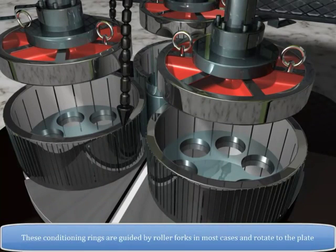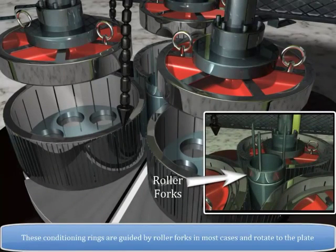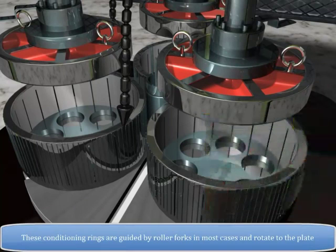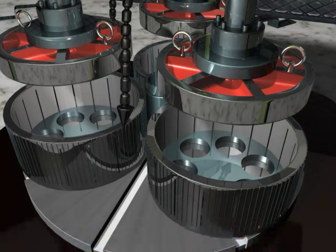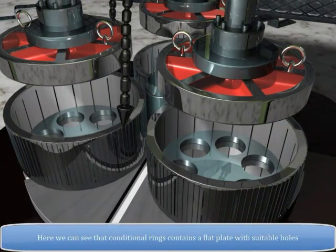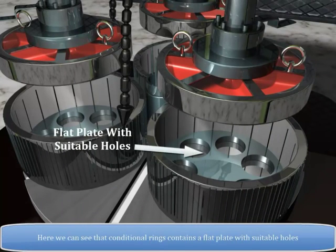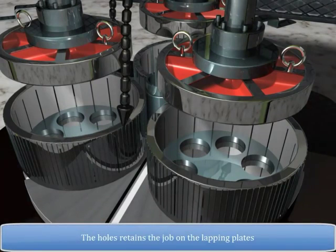These conditioning rings are guided by roller forks in most cases and rotate to the plate. The conditioning rings contain a flat plate with suitable holes. The holes retain the job on the lapping plates.